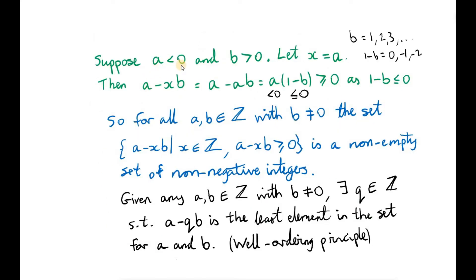Now let's look at the other case for when a is less than 0, that is when b is greater than 0. If we let x equal a, we find that we get a times (1 minus b). Since a is negative and b is a positive integer, (1 minus b) is a non-positive integer. So when we multiply a by (1 minus b), we get something greater than or equal to 0. So we've found elements in our set for when a is less than 0 and b is greater than 0.